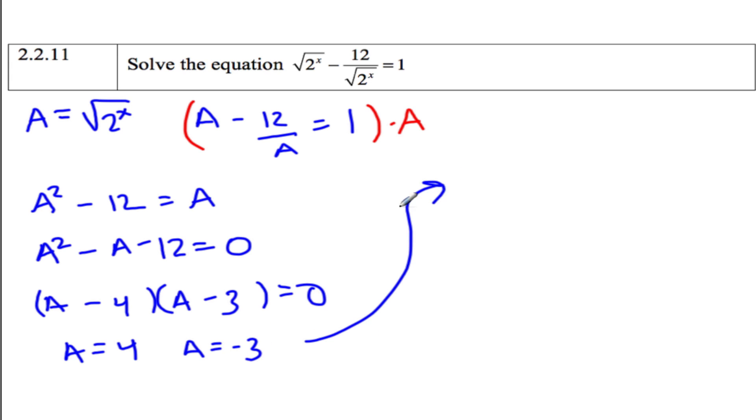Now remember what A equals. A is equal to root 2 to the X. So square root of 2 to the X equals 4. Well we'll do this one first. Square both sides, we get 2 to the X equals 16. So that means X is equal to 4.